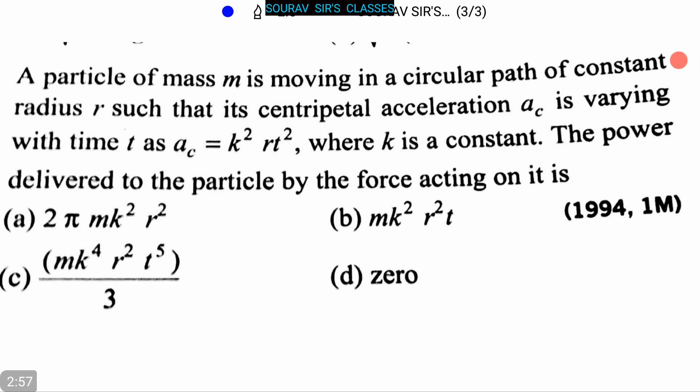Now let's proceed to the next question. The question is: a particle of mass m is moving in a circular path of constant radius r such that its centripetal acceleration ac is